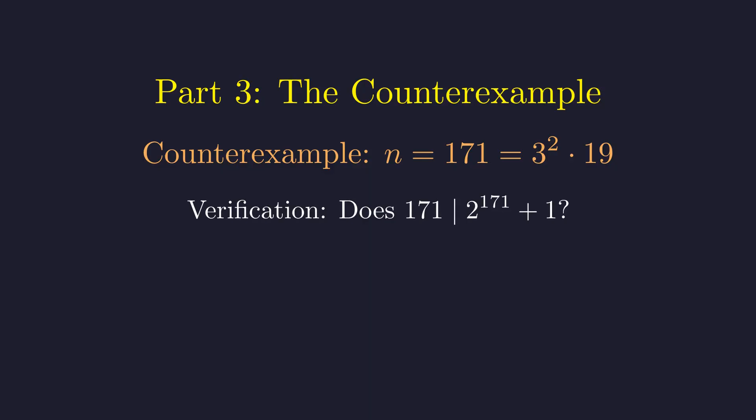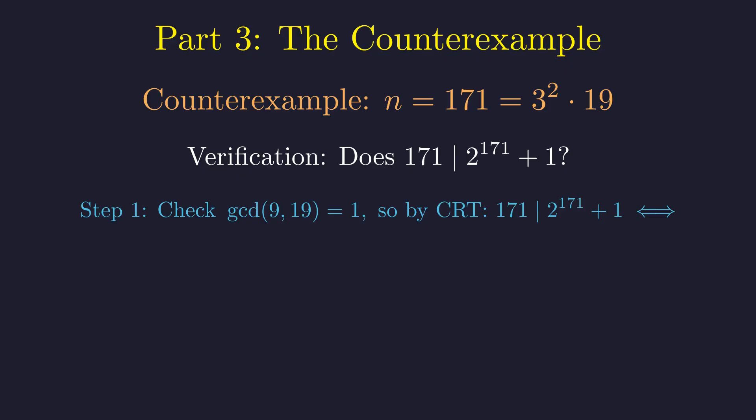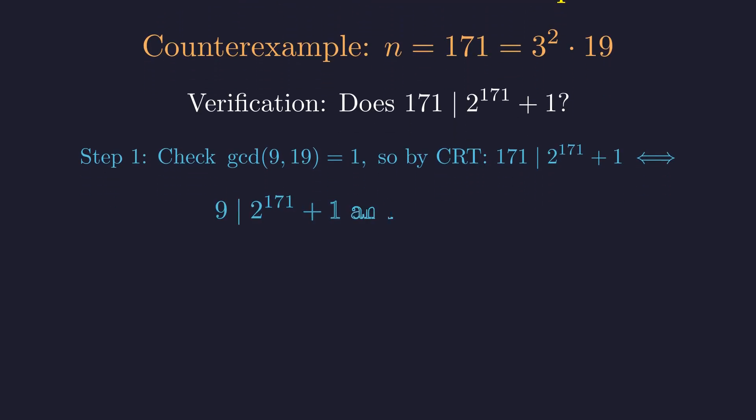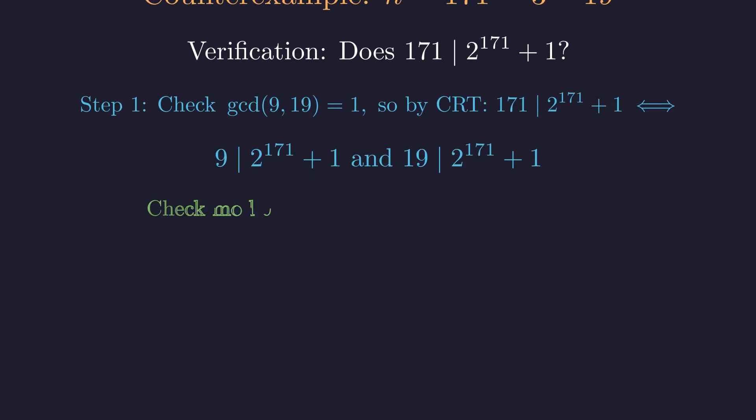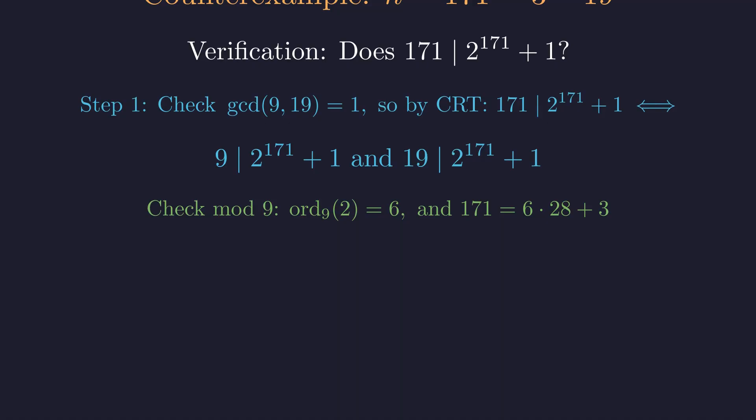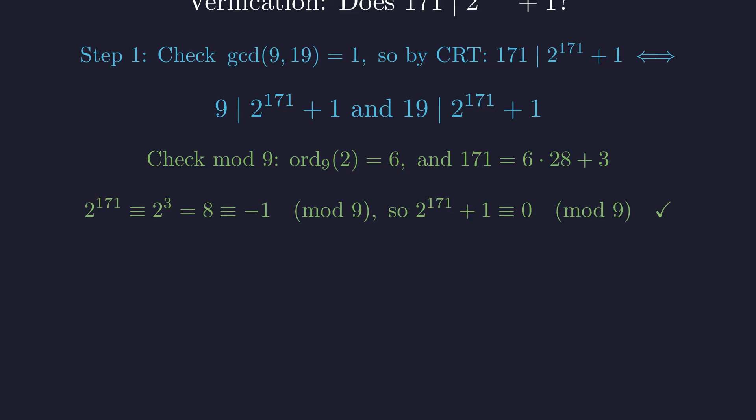Let's rigorously verify whether 171 actually divides 2 to the 171st power plus 1 using modular arithmetic. First, since 9 and 19 are coprime by the Chinese remainder theorem, 171 divides the expression if and only if both 9 and 19 divide it separately. So we need both conditions to hold. Modulo 9, the multiplicative order of 2 modulo 9 is 6. Since 171 equals 6 times 28 plus 3, we get 2 to the 171st congruent to 2 cubed equals 8, which is negative 1 modulo 9. Therefore 9 divides the expression.